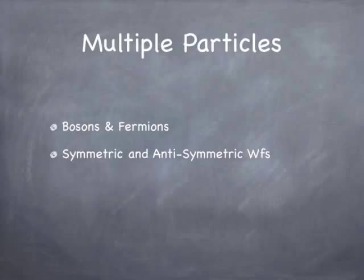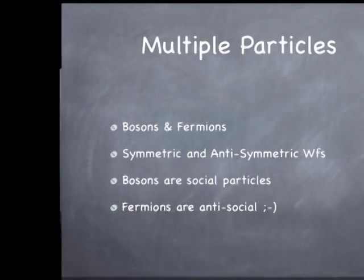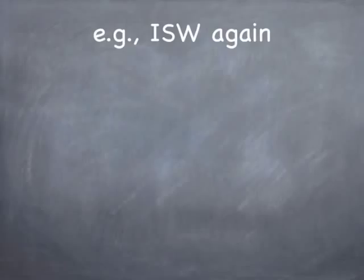Bosons are social — they like to get together. Fermions are antisocial. One of the consequences of the symmetry requirement is that you can't put two fermions in exactly the same quantum state. They're loners; only one fermion is allowed in a particular quantum state of the whole system. So they tend to avoid one another.